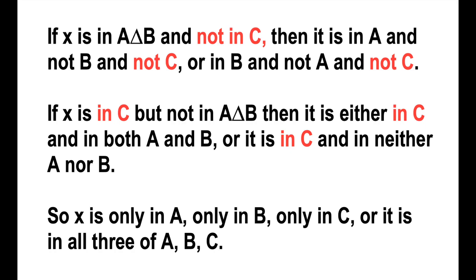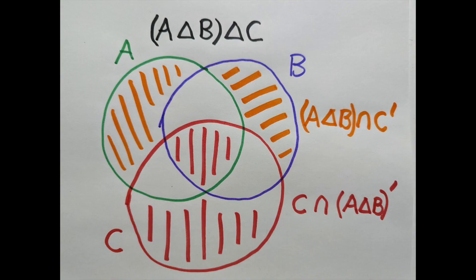The other case, if X is in C but not in A triangle B, colored in red, then it is either in C and in both A and B, or it is in C and in neither A nor B.